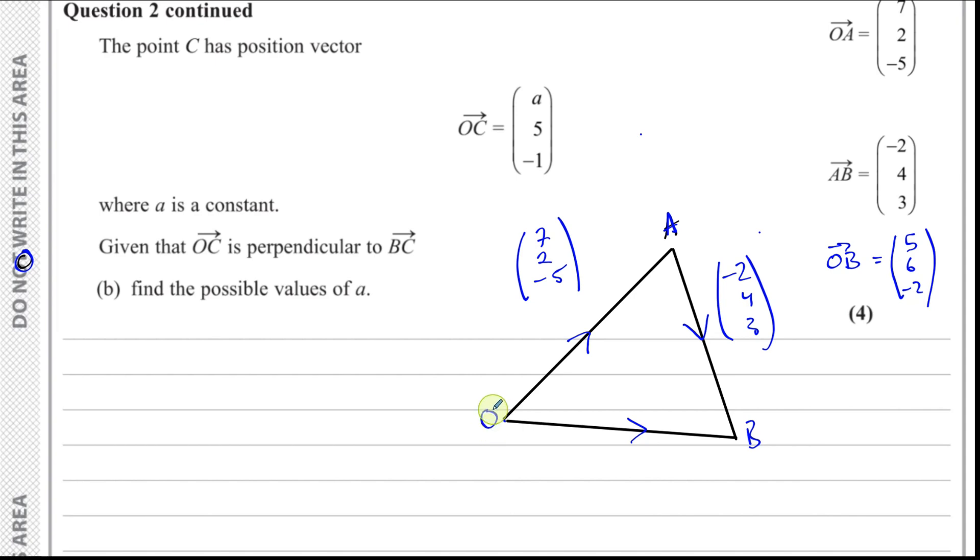We know what OB is. So that's the original O. OB we worked out is 5, 6, minus 2. You have OA, OB. Now there's a third point C which has position vector a, 5, minus 1. We know that OC is perpendicular to BC.